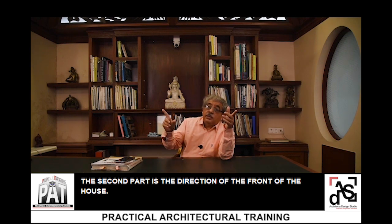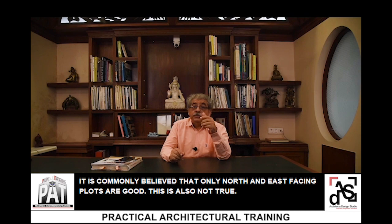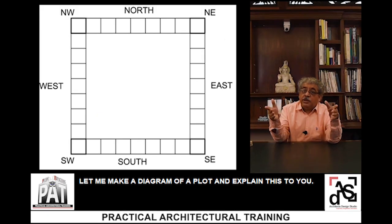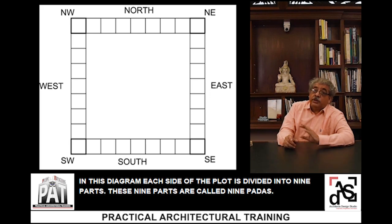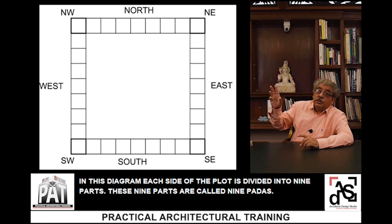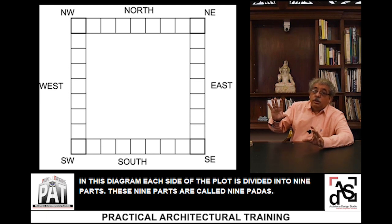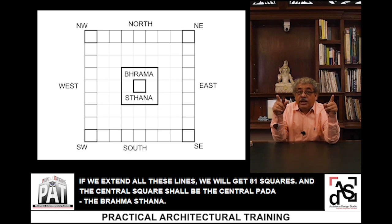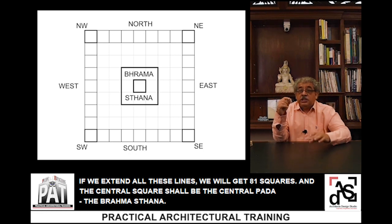The second part is the direction of the front of the house. It is commonly believed that only north and east facing plots are good — this is not entirely true. In this diagram, each side of the plot is divided into 9 parts called 9 Padas. If we extend all these lines we get 9 into 9, which is 81 squares, and the central square is the central Pada — the Brahma Stham.